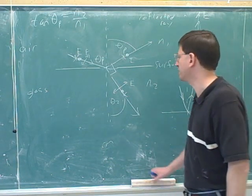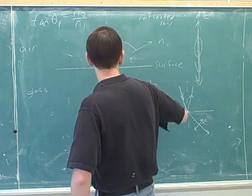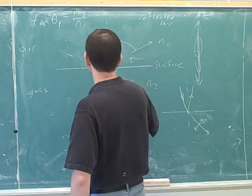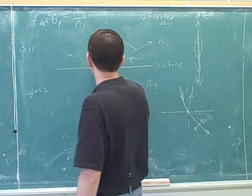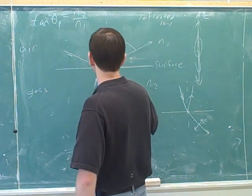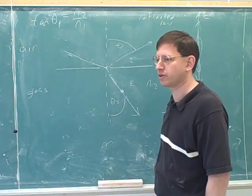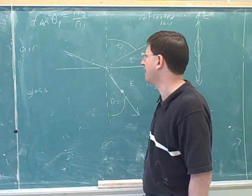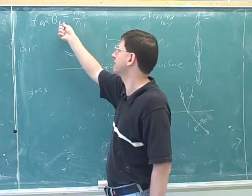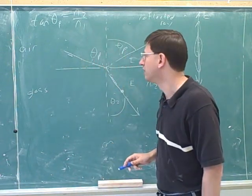Let's do a couple of applications. Some problems might just be plug-and-chug into the equation, but a conceptual problem might look like this. This special angle is called the polarizing angle or the Brewster angle. Make sure you don't confuse it with the critical angle — the critical angle is for total internal reflection, which is a different concept.